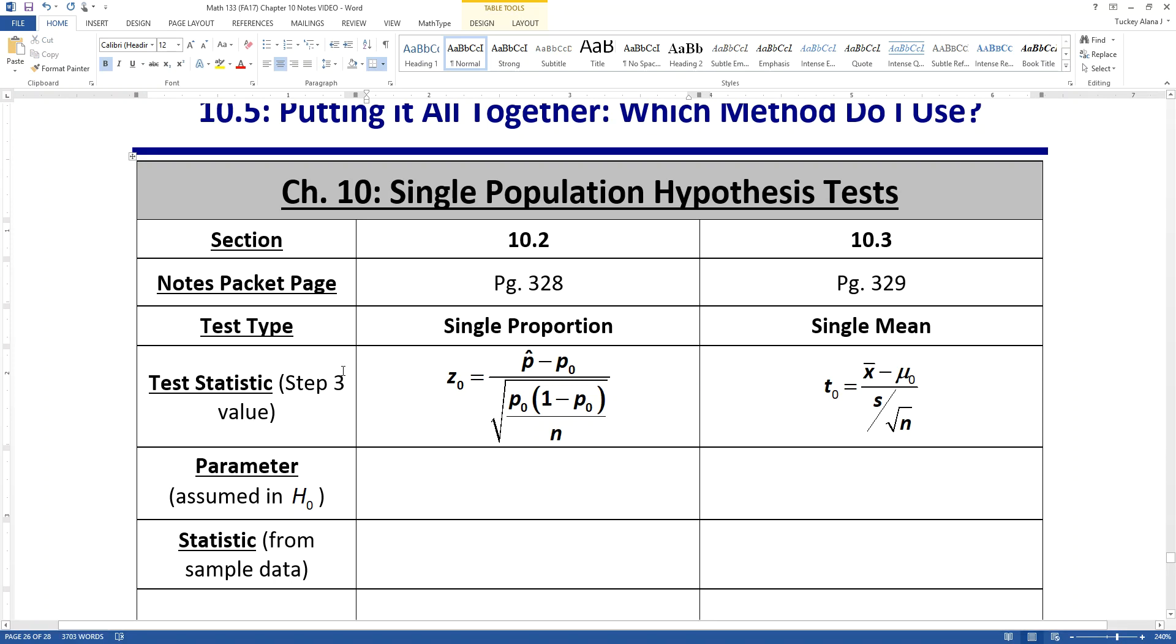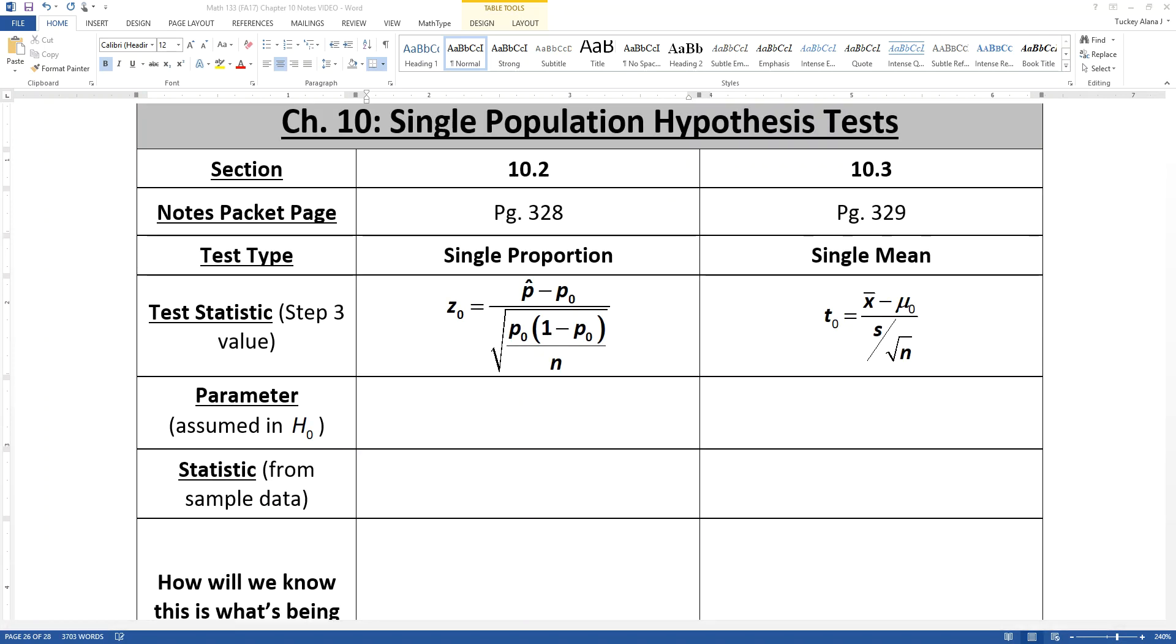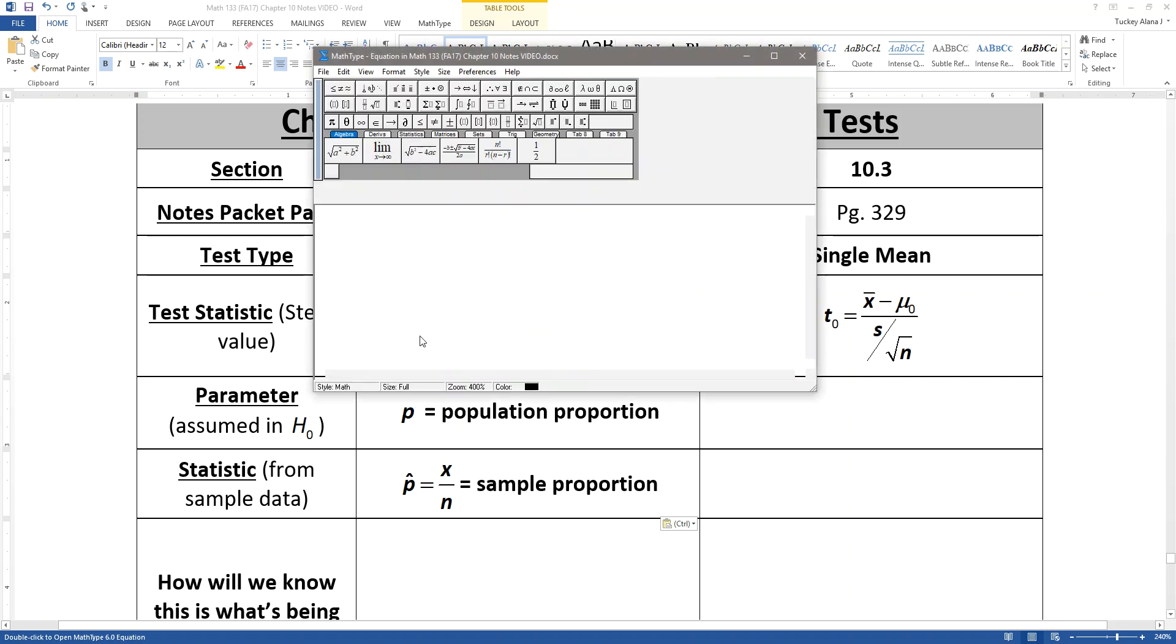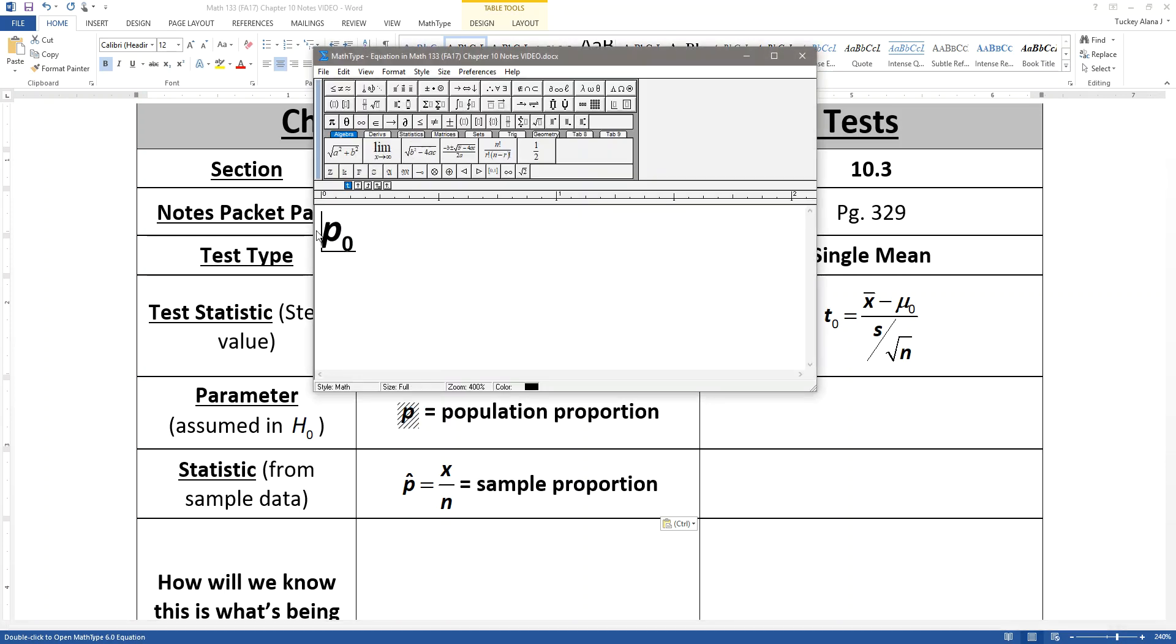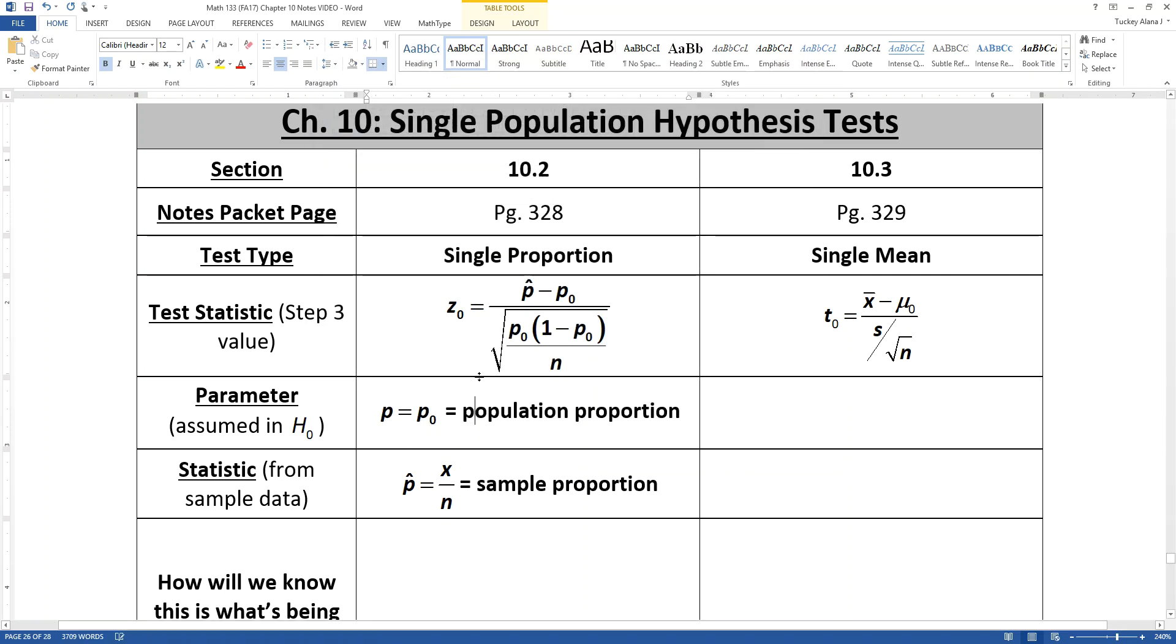What were we assuming and what are we testing? For a single proportion test, our null hypothesis talks about our parameter p. You're assuming in your null hypothesis that p is equal to some particular value, p0, the population proportion. The statistic you're using to test that would be p-hat, which is your sample proportion. So you use p-hat to test the p0 that you assumed to be true, and you create a test statistic based off the ideas of standard error.